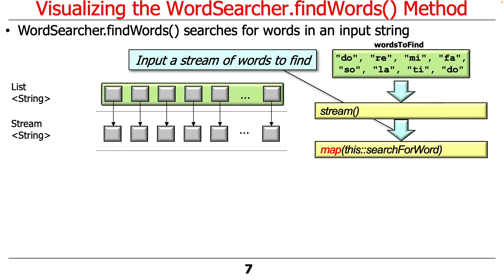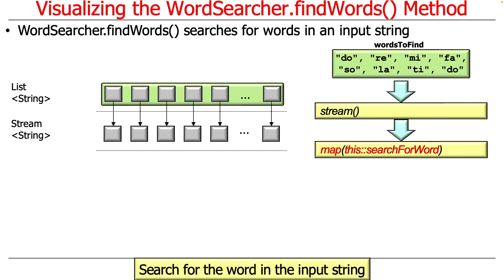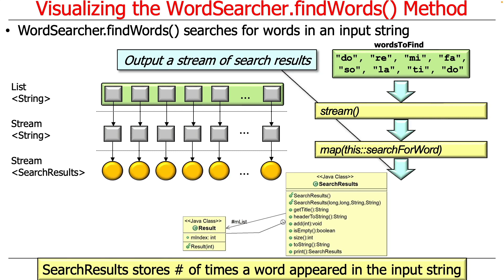We then take that stream of words to find and connect it using map with a behavior called searchForWord. searchForWord is pretty cool — it takes the input string that it has stashed away, and for every one of the words to find, it looks up that input string to determine whether there's a match. Since it's the do-re-mi lyrics, we're going to find matches galore. It tries to find not just whether matches occur, but where they occur.